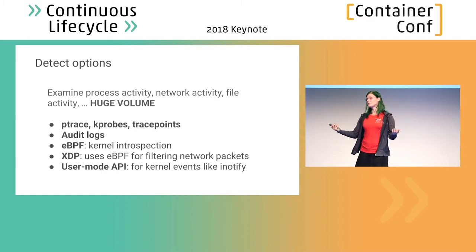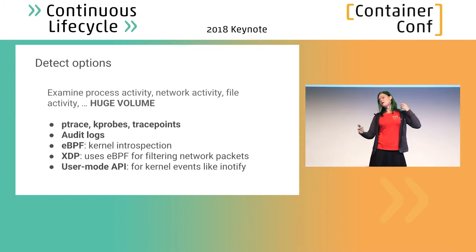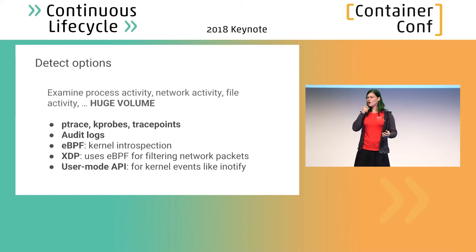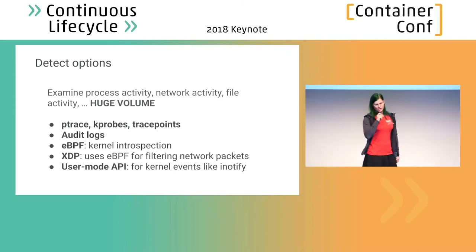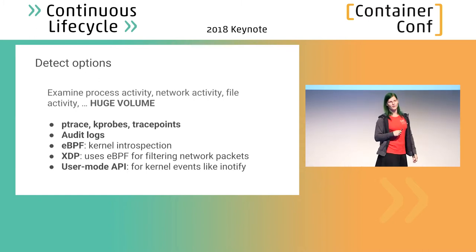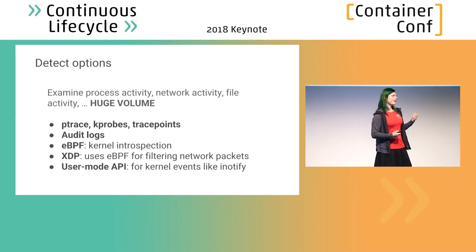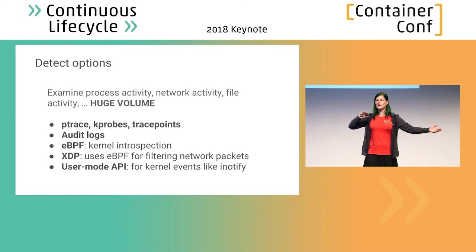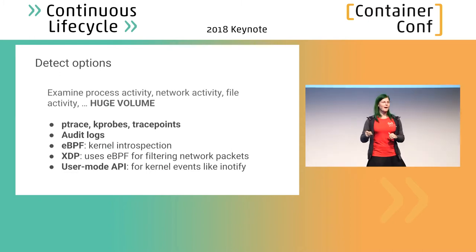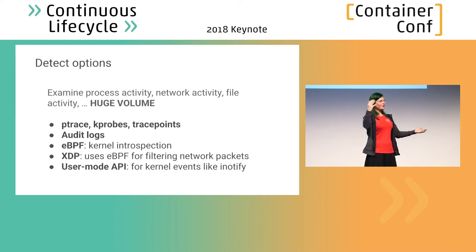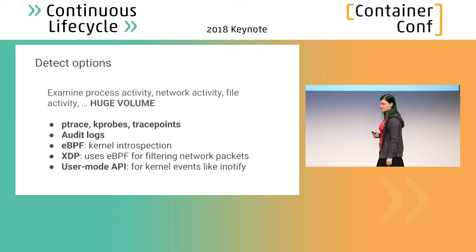There are different ways this can be implemented. If you have a relatively up-to-date Linux kernel, you can use eBPF, which is a technology for hooking in and seeing events happening in an efficient way. XDP is also something newer that allows you to use eBPF filters to look at network traffic, which can be very useful. Some implementations also use user mode APIs to look for kernel events triggered by things like iNotify. There isn't really a best way to do this yet — each option has different trade-offs. Some have higher performance cost but give you higher resolution information. Everyone is using different approaches right now.